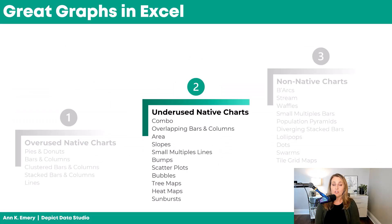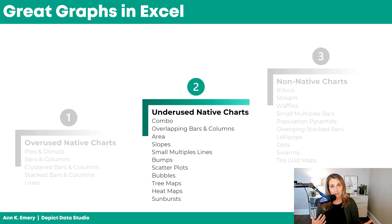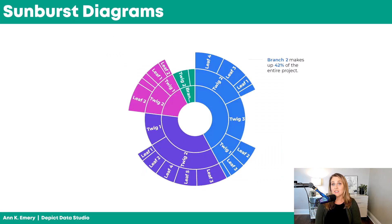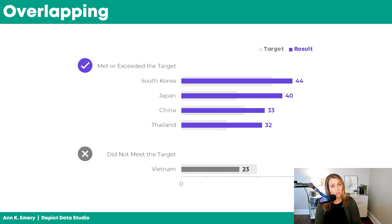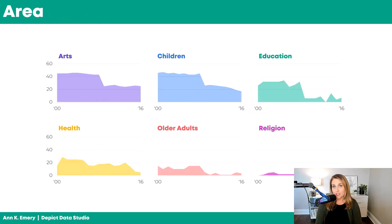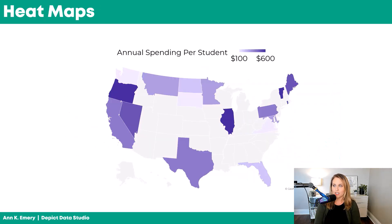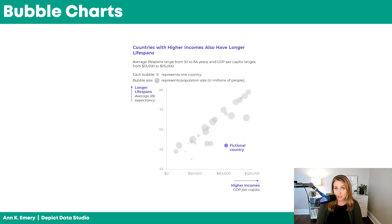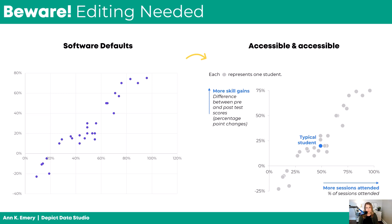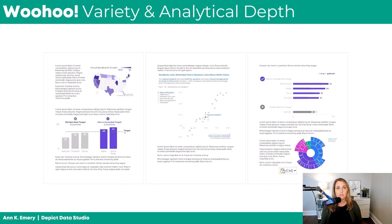Once you've tackled level one skills, you can move on to level two: the underused native charts. These are there, but a lot of them are newish or kind of hiding, so you might not have seen them or you might not be using them yet. This includes things like tree maps, sunburst diagrams for nested data, part-to-whole charts, combo charts, overlapping bar and column charts for tracking progress towards goals, area charts, slope charts, small multiples line charts, bump charts for showing rankings, heat maps, maps — did you know maps are in Excel? They're newish. Excel can also make scatter plots for X and Y, and bubble charts for X, Y, and Z. Just like before, beware — you still have to roll up your sleeves and make some intentional edits. But it's worth it because look how nice your report, slide deck, or dashboard is going to look with more variety and more analytical depth.